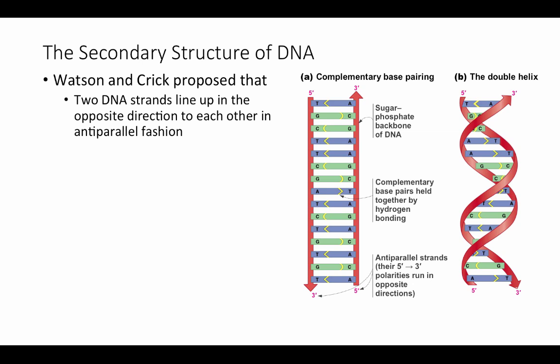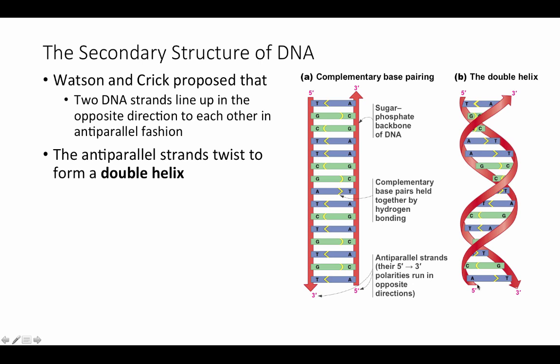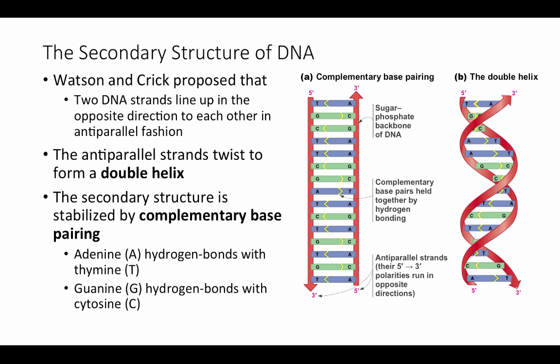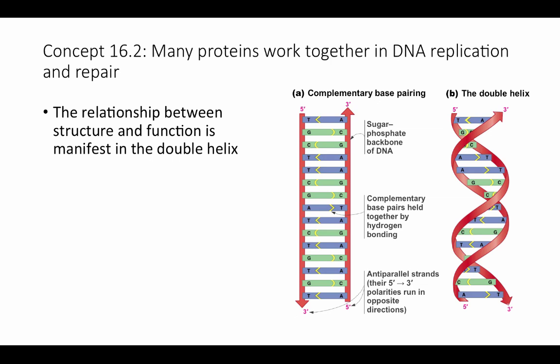Reviewing the secondary structure: Watson and Crick proposed that two DNA strands line up anti-parallel to each other — one running 5' to 3', the other running 3' to 5' in the opposite direction. These anti-parallel strands form a double helix, twisting around each other. This secondary structure is stabilized by hydrogen bonds between complementary base pairs — A with T, and G with C — keeping the two strands connected.